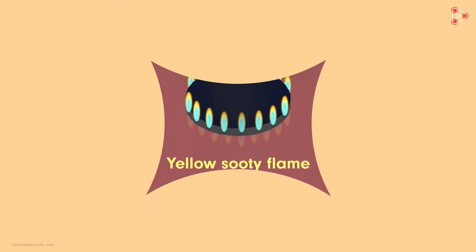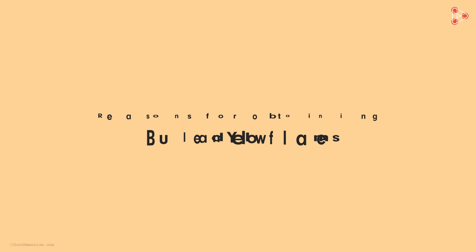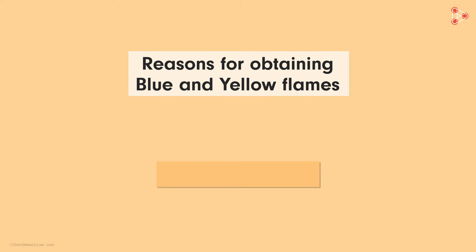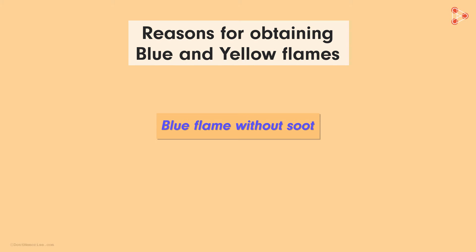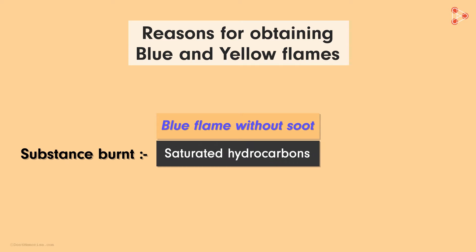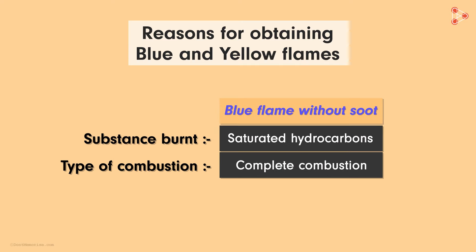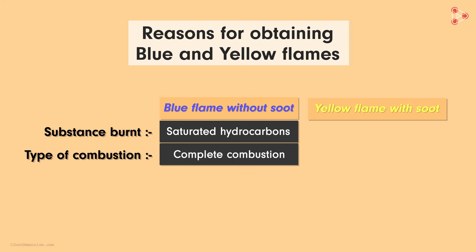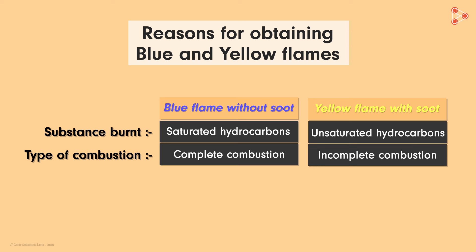To conclude this, let us review the reasons for obtaining blue and yellow flames again. When do we obtain a blue clear flame? Yes, we obtain it either when a saturated hydrocarbon is burnt or when there is complete combustion of the compound. In contrast to this, a yellow flame with soot is obtained when the hydrocarbons are unsaturated or when there is incomplete combustion of the compound.